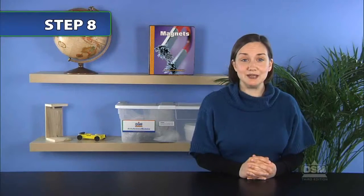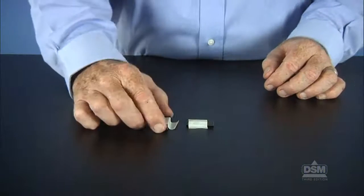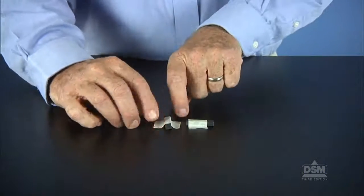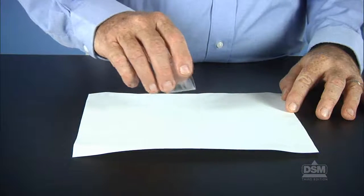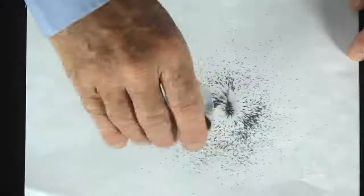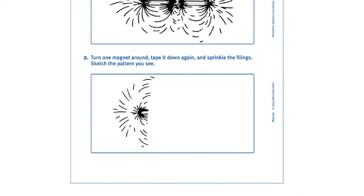Now ask the teams to remove the paper and iron filings, turn one of the magnets 180 degrees facing the opposite direction, and tape it down again. Have them cover the magnets again with paper, sprinkle the iron filings, and notice how the pattern has changed. Have them sketch this pattern at the bottom of Activity Sheet 4, Part B.